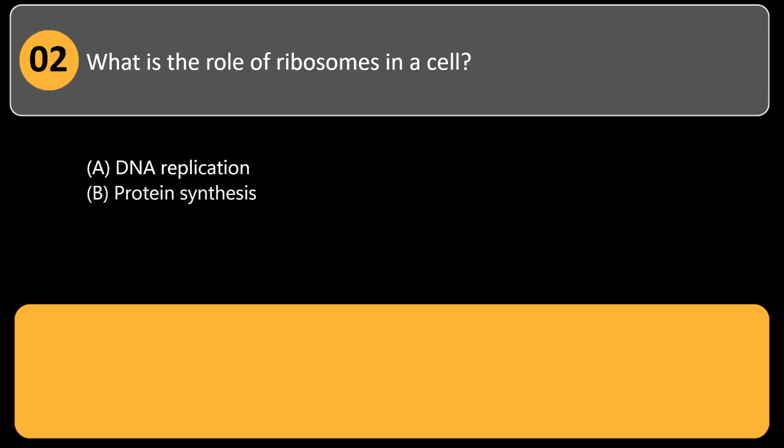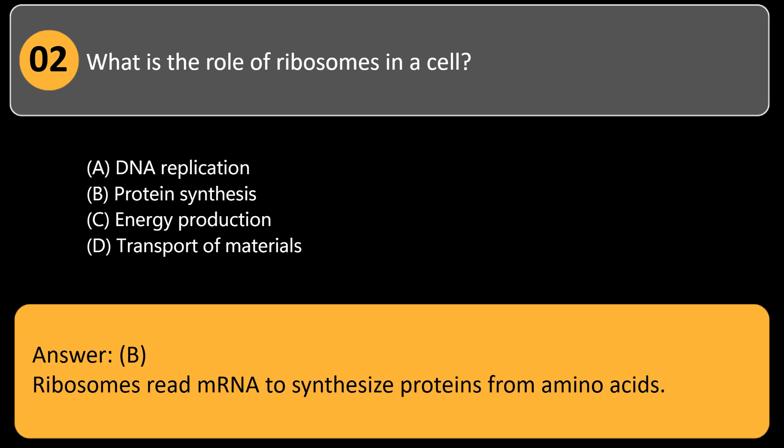What is the role of ribosomes in a cell? A. DNA replication, B. Protein synthesis, C. Energy production, D. Transport of materials. Answer: B. Ribosomes read mRNA to synthesize proteins from amino acids.